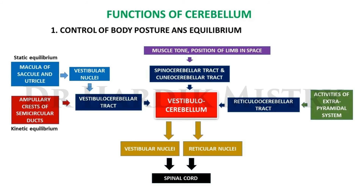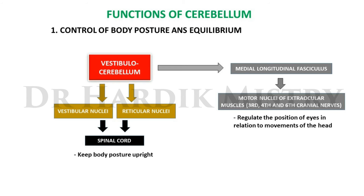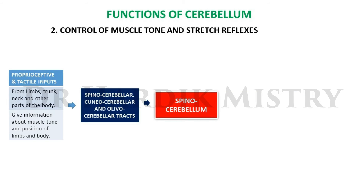Efferents from the flocculonodular lobe and fastigial nuclei reach the spinal cord through vestibular and reticular nuclei via the vestibulospinal and reticulospinal tracts. These influence spinal motor neurons to keep body posture upright. Via the medial longitudinal fasciculus, they connect the motor nuclei of extraocular muscles and regulate eye position in relation to head movements.